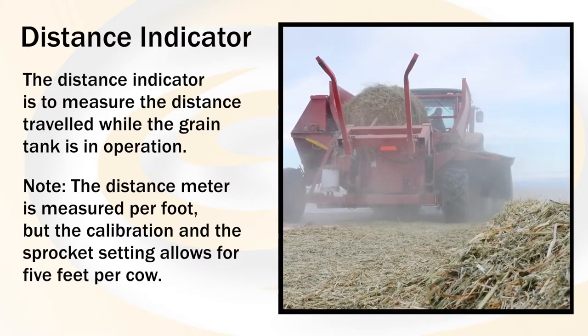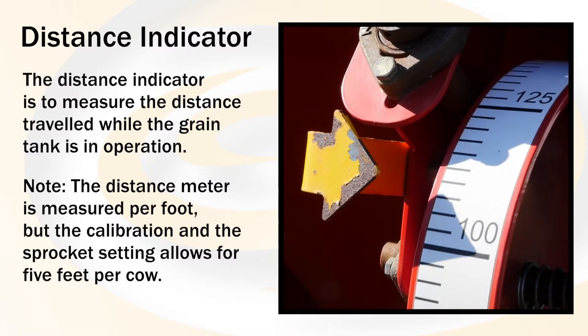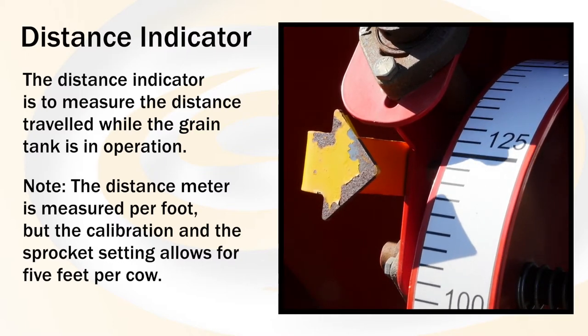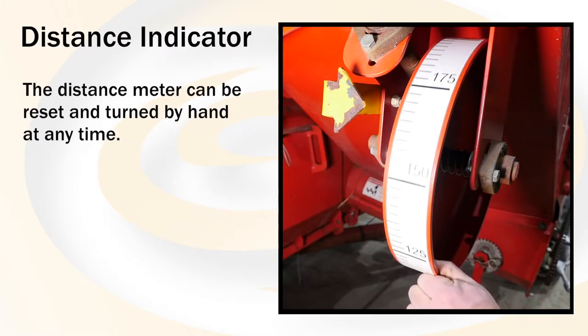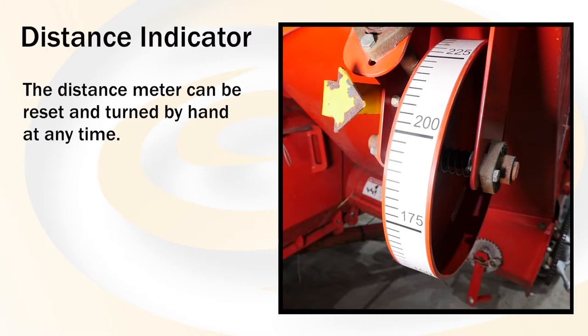So as an example, and to be more accurate, 200 feet would be the distance to feed 40 cows. This distance meter can be reset and turned by hand at any time.